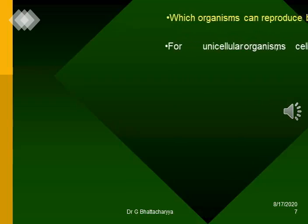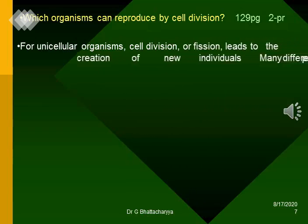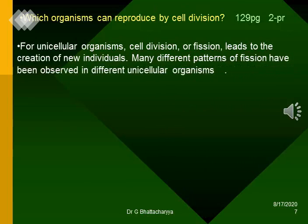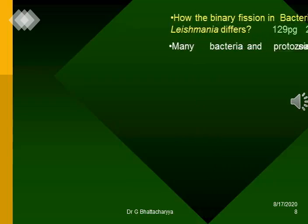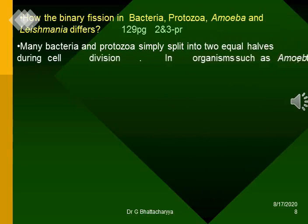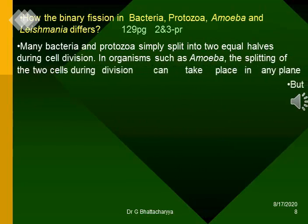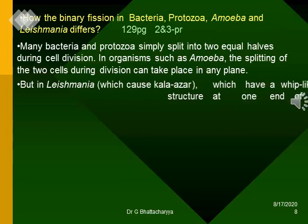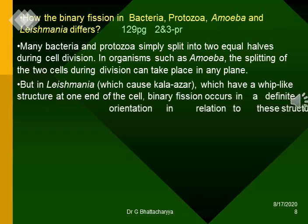Which organisms can reproduce by cell division? For unicellular organisms, cell division or fission leads to the creation of new individuals. Many different patterns of fission have been observed in different unicellular organisms. How does binary fission in bacteria, protozoa, amoeba, and Leishmania differ? Many bacteria and protozoa simply split into two equal halves during cell division. In organisms such as amoeba, the splitting can take place in any plane. But in Leishmania, which causes the disease kala-azar and has a whip-like structure at one end of the cell, binary fission occurs in a definite orientation in relation to these structures.